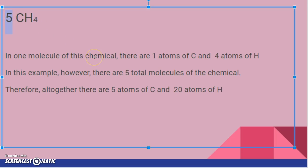The five out front tells us there's five molecules or five copies of this chemical CH4. Therefore, if we distribute, five times one is five for the number of carbon atoms, five times four is 20, so we have 20 hydrogen atoms.